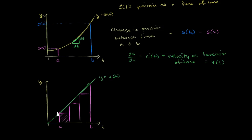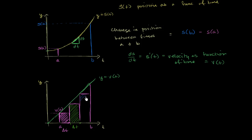What is each rectangle's area approximating? For this first one, the height is v of a — your velocity at time a — and the width is delta t. So the area is your velocity at that moment times your change in time, which gives your change in position. This rectangle is an approximation of your change in position over that time interval. Then the next rectangle approximates your change in position over the next delta t, and so on.